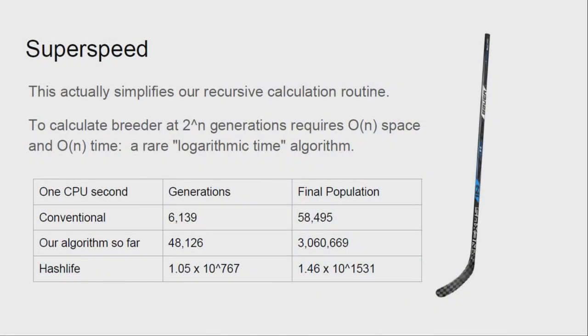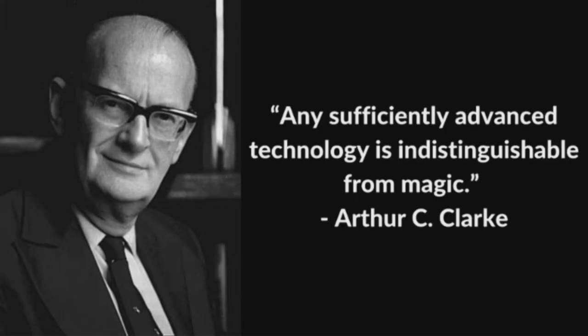What does this do for us? Well, it actually means that instead of going from 6,000 to 48,000 generations in a second, all of a sudden we're able to calculate some huge number with 768 digits, number of generations in that one second. And that is hash life. That is magic.